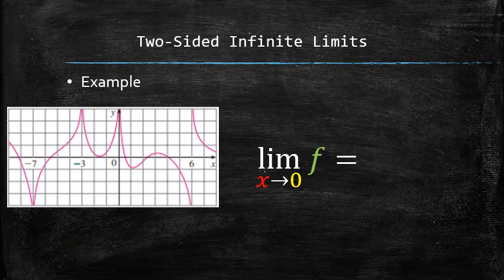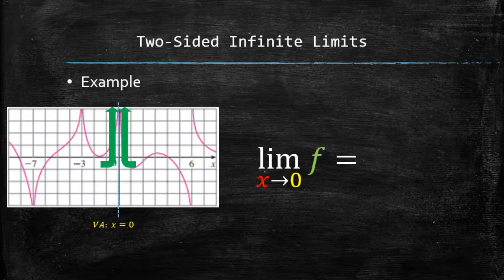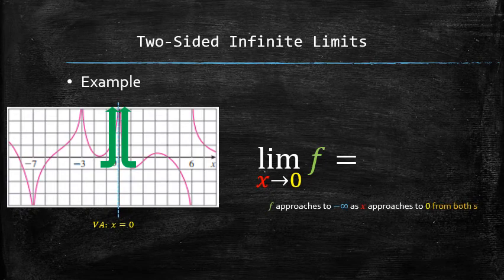To find the next limit, we need to determine whether the function goes up or down from both sides of the asymptote x equals 0. It is easy to see that the function approaches positive infinity on both sides. In other words, f approaches to positive infinity as x approaches to 0 from both sides. Therefore, the answer is positive infinity.